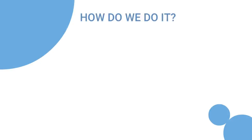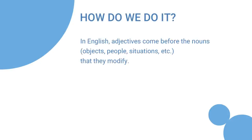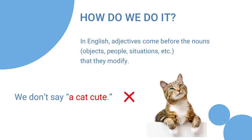How do we do it? In English, adjectives come before the nouns, objects, people, situations, etc. that they modify. We don't say 'a cat cute.' We say 'a cute cat.'